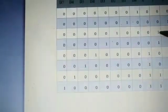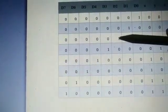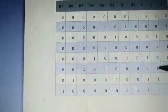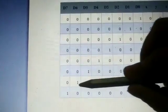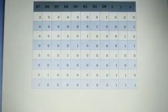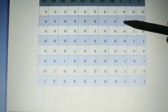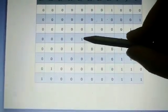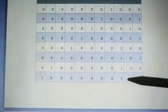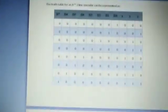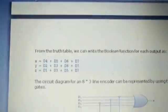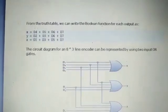For y, we find 1 at d2, d3, d6, and d7. For z, we get inputs at d1, d3, d5, and d7. So we club all these inputs to get the x, y, and z output lines.